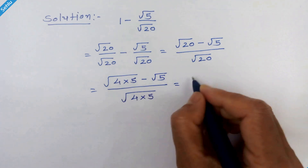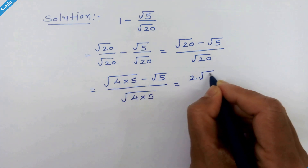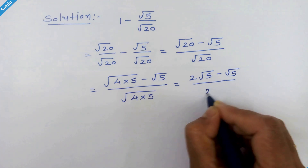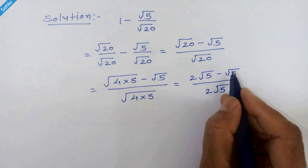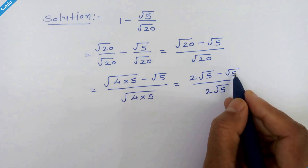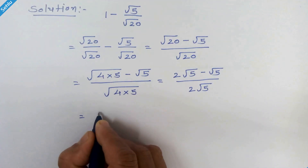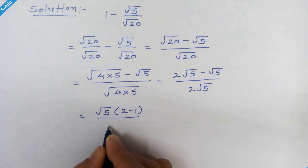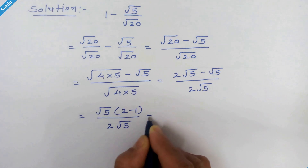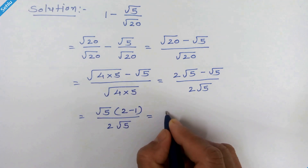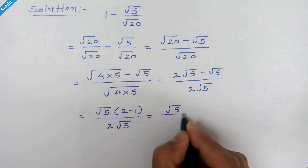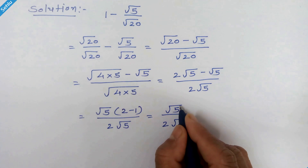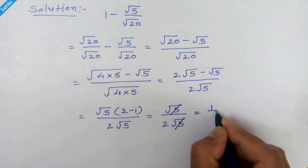Square root of 4 is 2. So we can write 2 times square root of 5 minus square root of 5 upon 2 times square root of 5. From here we can factor out square root of 5. So it will be square root of 5 times (2 minus 1) upon 2 times square root of 5. This square root of 5 gets cancelled out. So we have 1 upon 2.